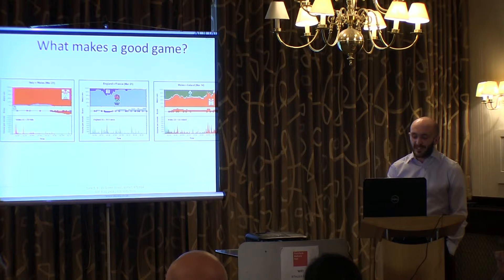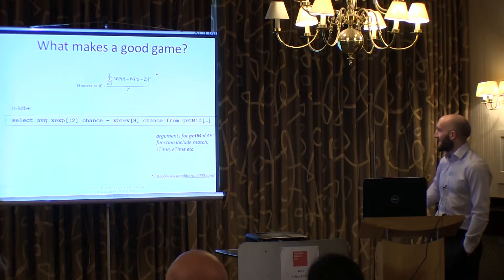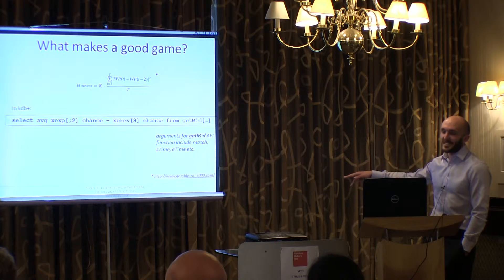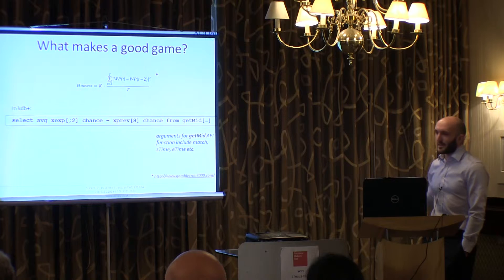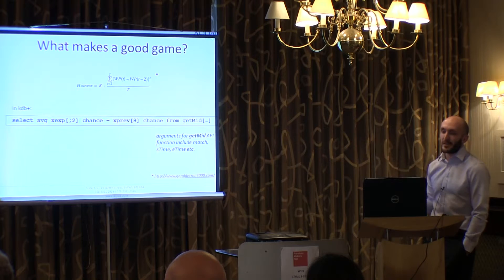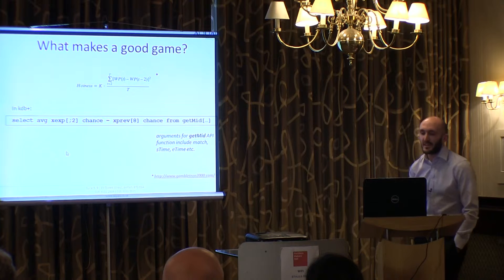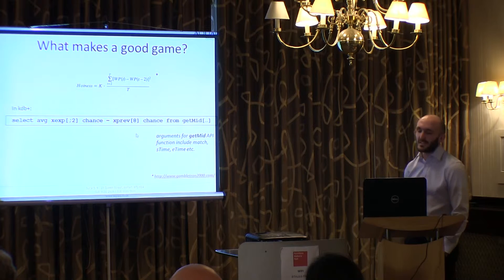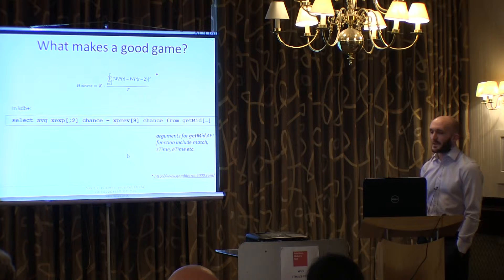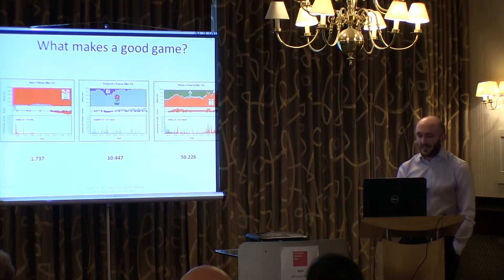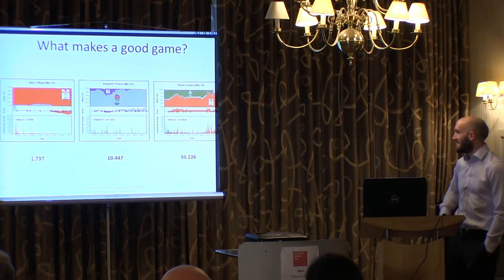How can you quantify this kind of thing? Here is the formula for 'hotness', which is taken from a website called the Gamblotron 2000. Basically, if you take the chance of a given outcome at a given time and the chance of the same outcome two minutes ago, sum all that throughout the game, square it, and then add two constants — t for the length of the event and k as a scaling constant to make it a sensible number — you can write that effectively in KDB using the getMid function, which comes with the Torque Connect package. Inside the arguments you put in things like which match, what the start and end times are, which market, and so on. It hides away that logic so we can do a nice clean KDB function. Italy versus Wales scores 1.73, England versus France is 10, and Wales versus Ireland is 15 — not surprisingly, the most interesting game.